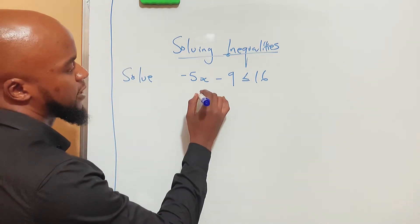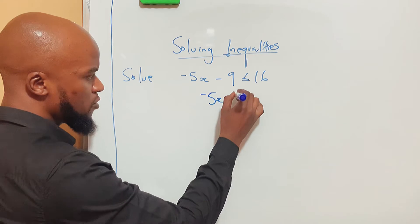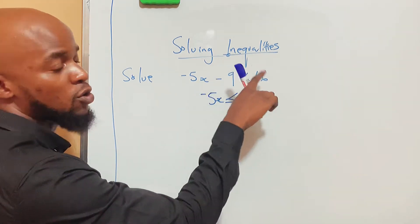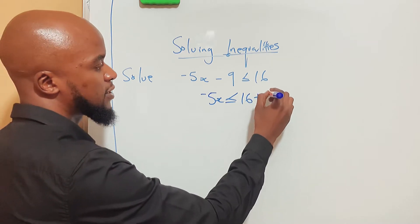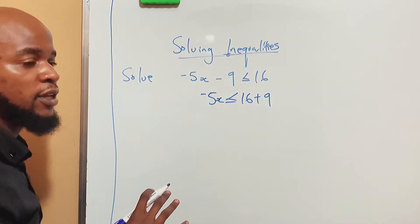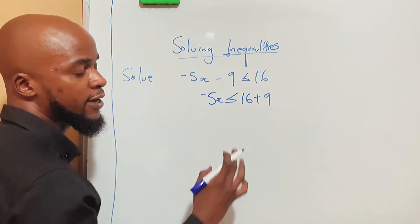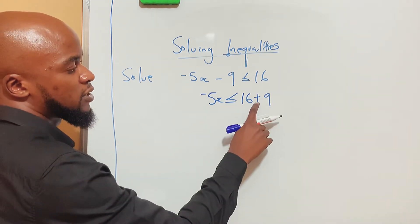You group the like terms to get -5x ≤ 16. You see, this -9 goes to the other side and becomes +9. Whenever a number crosses the equal sign or inequality sign, the sign changes.